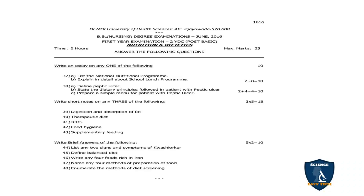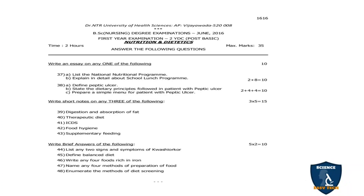Moving on to the June 2016 question paper. Essay question 1A: List the national nutritional programs — 2 marks. 1B: Explain in detail about school lunch program — 8 marks. 2 + 8 = 10 marks. Second question: Define peptic ulcer — 2 marks. State the dietary principles followed in a patient with peptic ulcer — 4 marks. Prepare a sample menu plan for a patient with peptic ulcer — 4 marks. 2 + 4 + 4 = 10 marks.